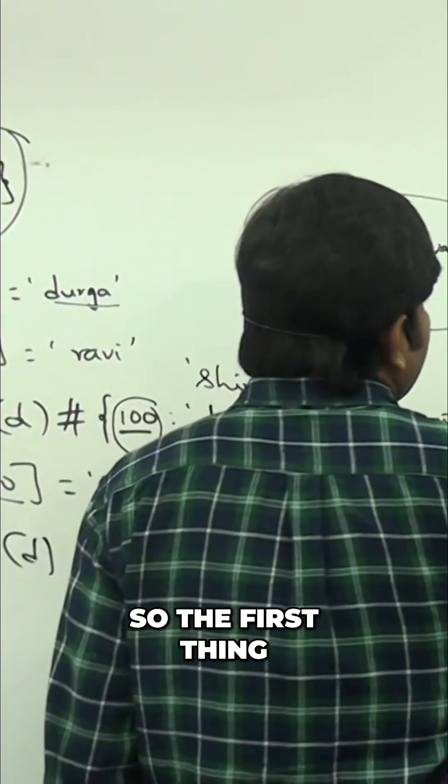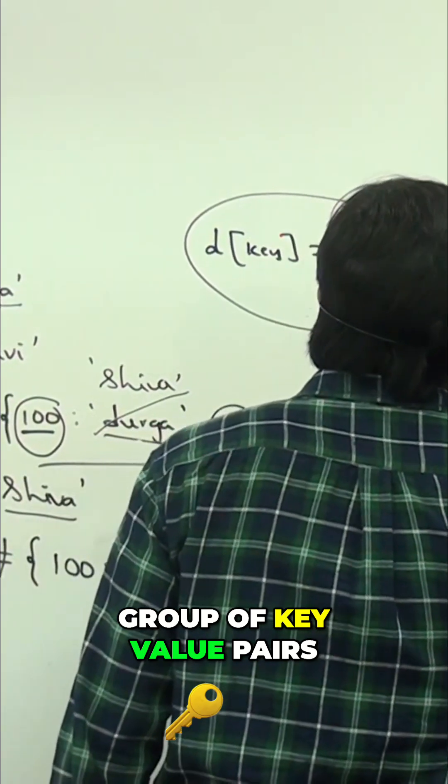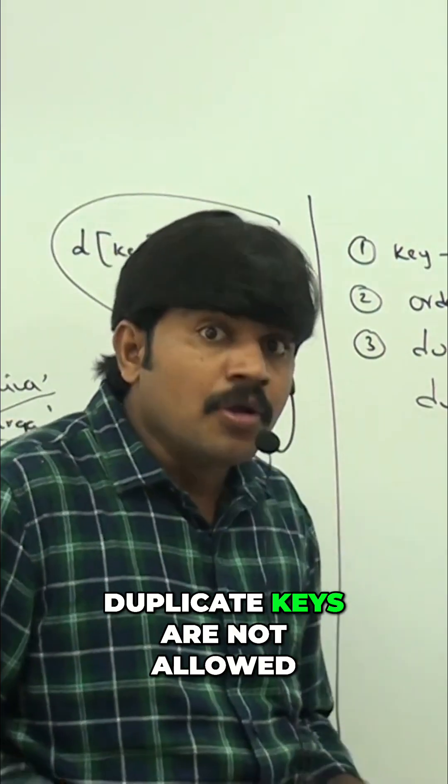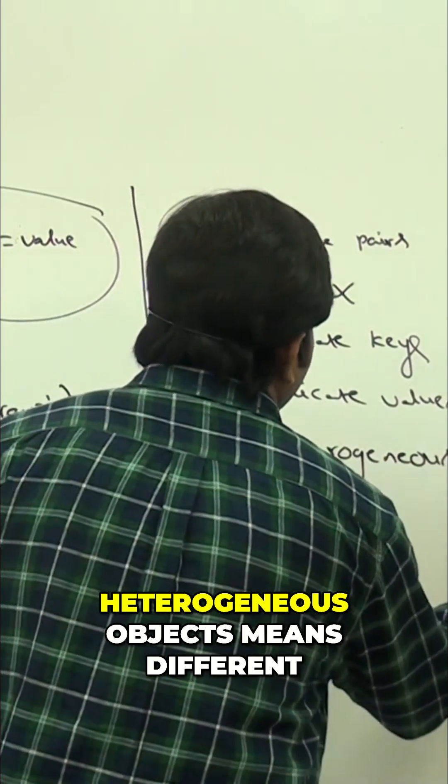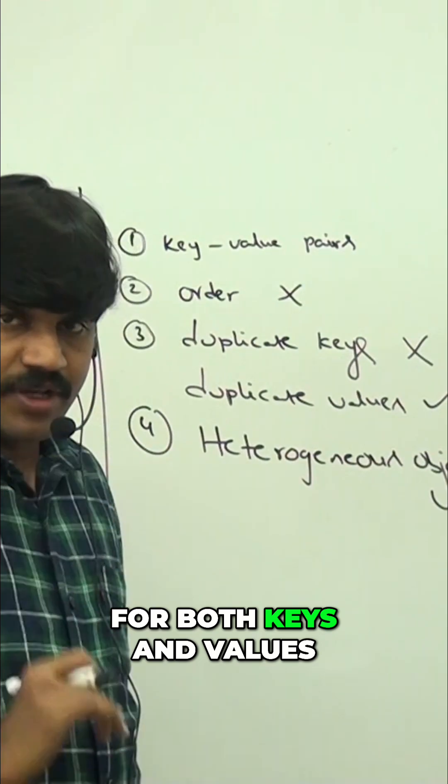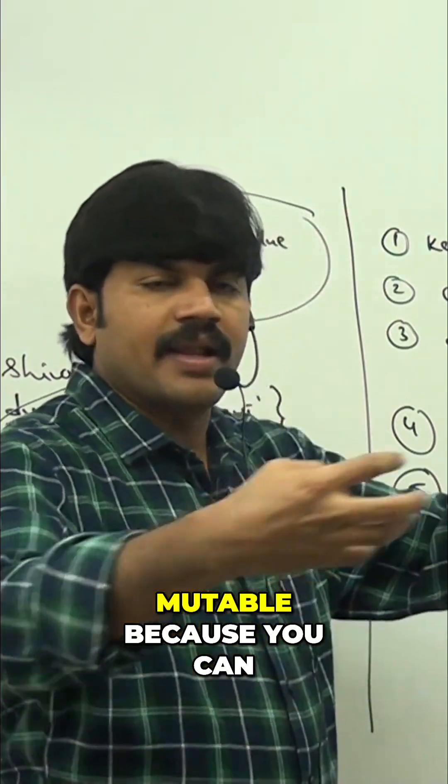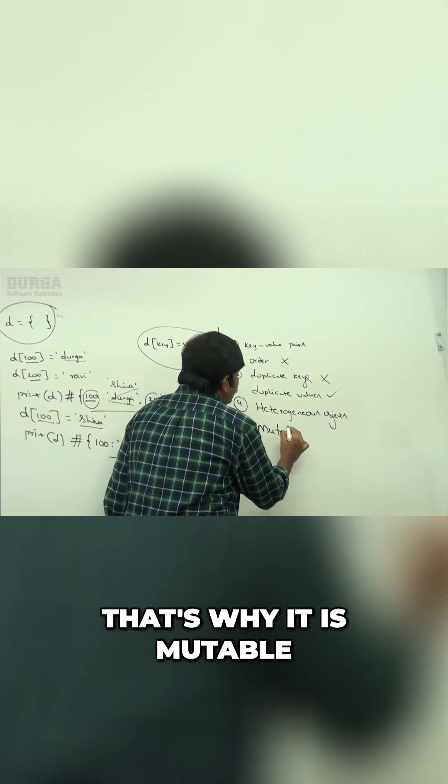So, the first thing meant for representing a group of key value pairs. Duplicate keys are not allowed but values can be duplicated. Heterogeneous objects means different type of objects allow for both keys and values. They are mutable because you can add something, you can replace something. That's why it is mutable.